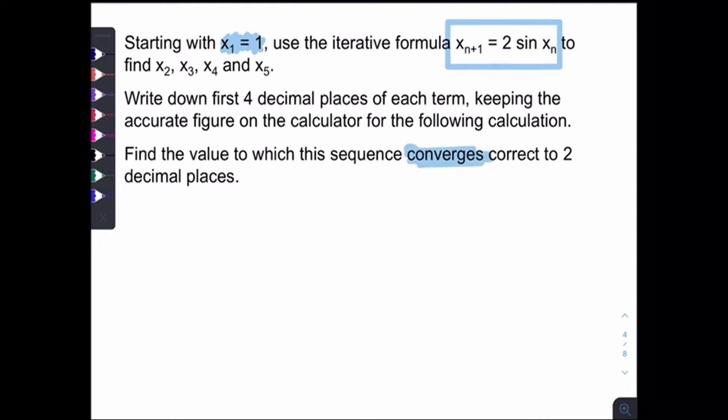So what does it mean by converge? Converge means the values will keep on changing until eventually when it stops changing, it will stop at a fixed value. So we say the sequence actually converges to a fixed value, which is the answer of the equation, which is the root of the equation.